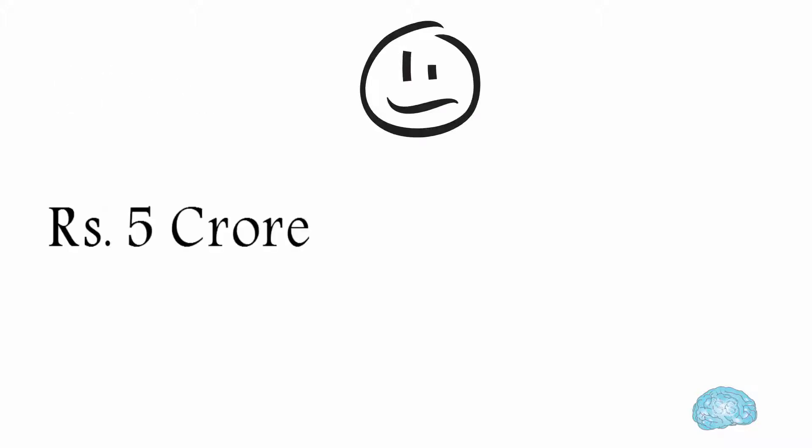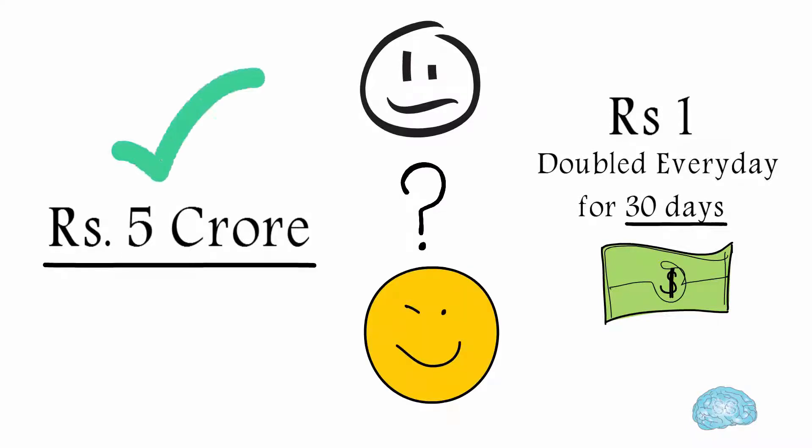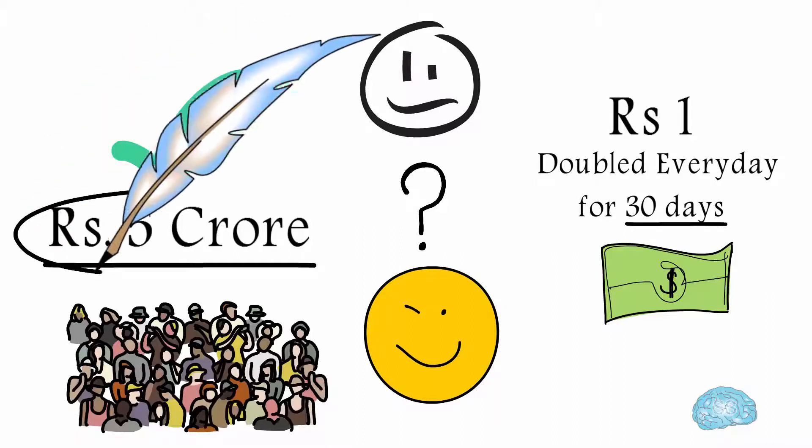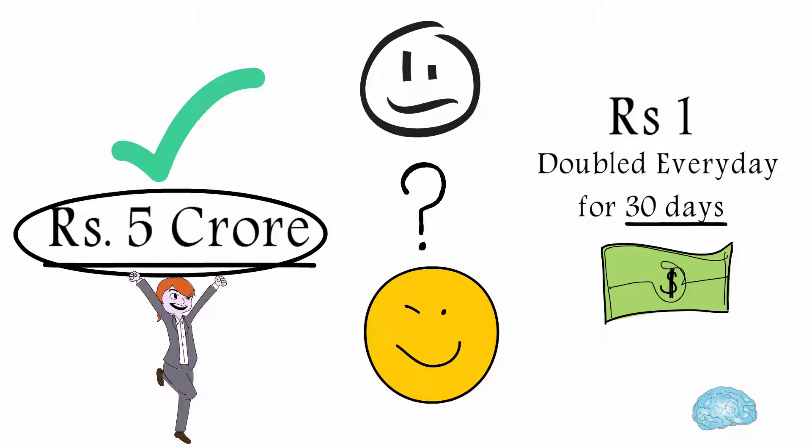What if I offer you 5 crore rupees right now or 1 rupee doubled every day for 30 days, and you get the money on the 30th day? Which one will you choose? But of course 5 crore rupees, right? Most of us will obviously go for the bigger amount which we could get immediately because nobody wants to wait for 30 days.